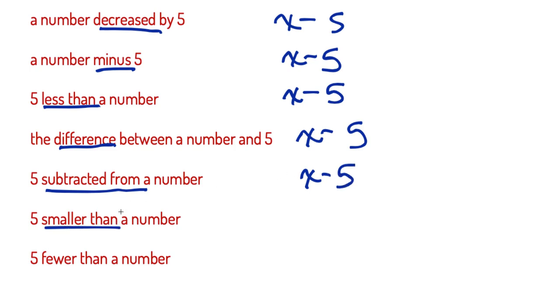5 smaller than a number - x minus 5. 5 fewer than a number. I think you know how this is going to work out, but fewer than is the phrase you're looking for. 5 fewer than a number, x would be the number, and 5 fewer than is x minus 5.